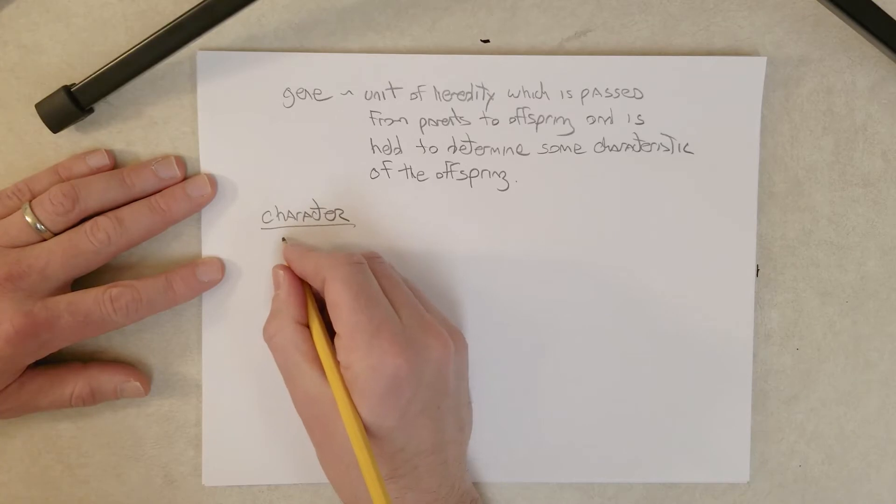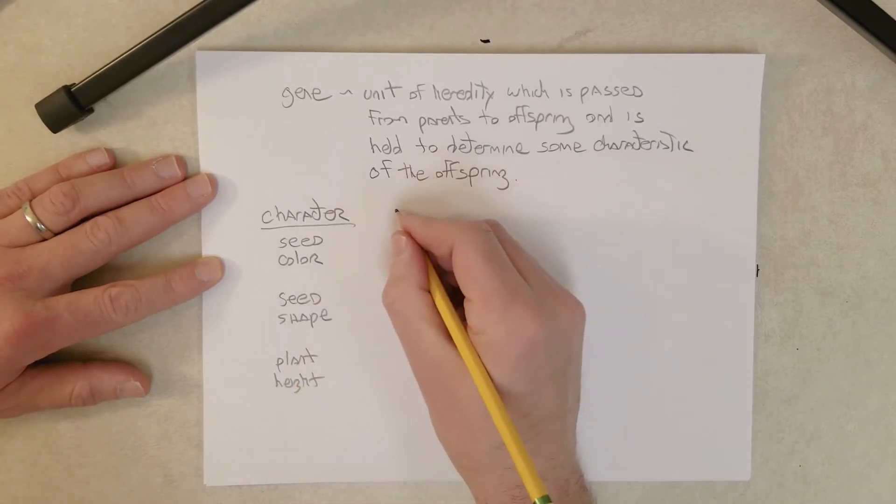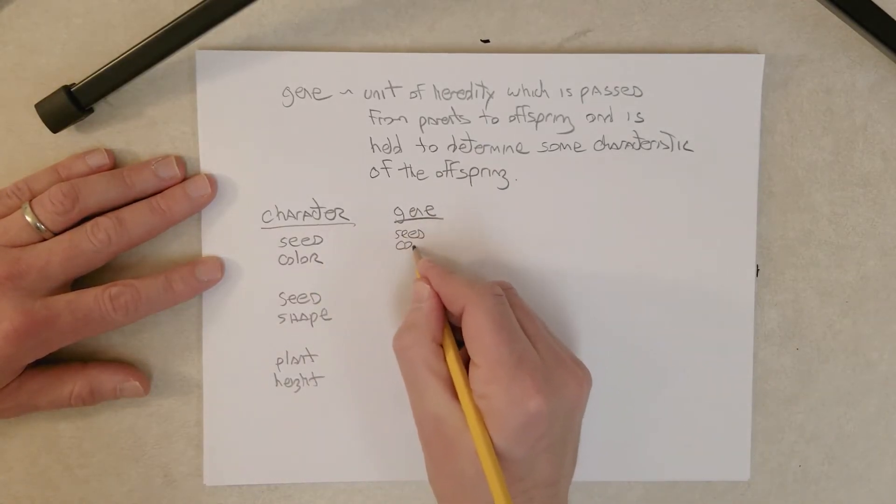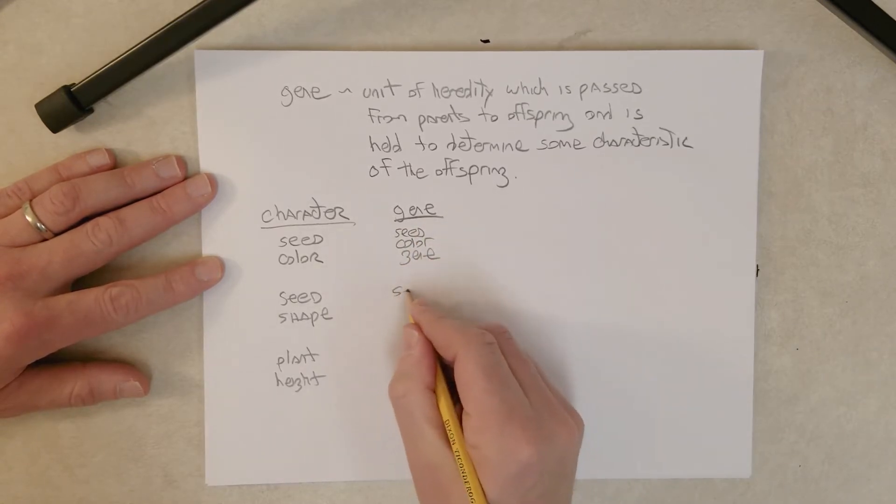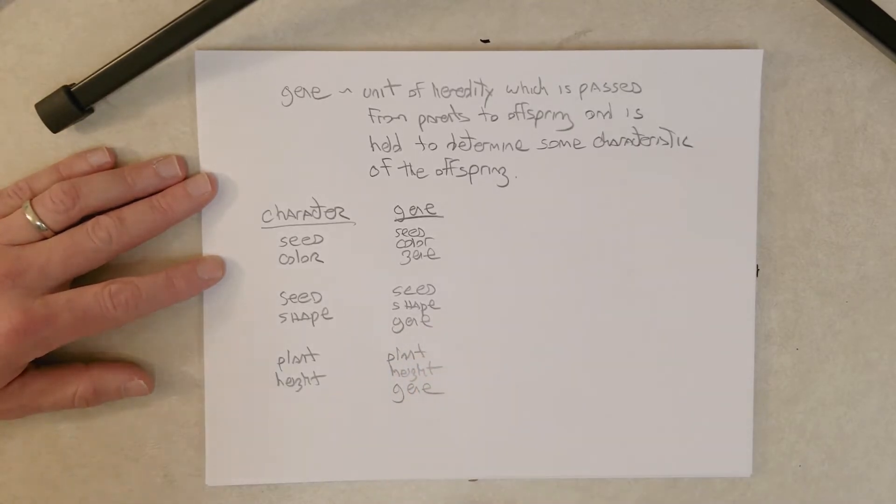So, with respect to character, let's say seed color and seed shape and plant height. Now, there is a gene in pea plants that control seed color and we'll call this the seed color gene. And one that controls seed shape. We'll call this the seed shape gene. And then we have one that controls plant height. We'll call this the plant height gene.